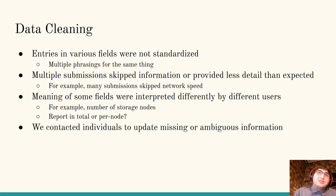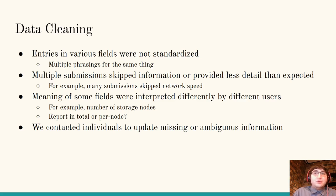Furthermore, multiple submissions skipped information or provided less detail than expected. For example, many submissions do not report network speeds, just generic terms like INFINIBAND or Ethernet. The meaning of some fields were interpreted differently by different users — for example, the number of storage nodes: some people reported per node and others reported it in total, about 50-50. In order to improve the quality of this dataset, we contacted individuals to update missing or ambiguous information. Overall, this resulted in about 20 submissions being changed.